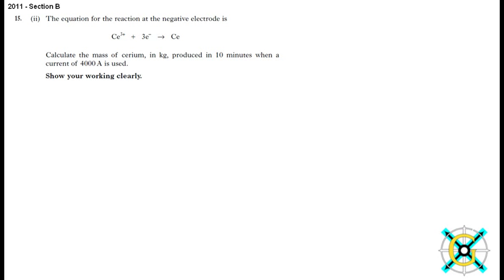This is a higher tutorial on quantitative electrolysis. I'm taking a question from 2011 section B, section 15. The question asks, the equation for the reaction at a negative electrode is Ce3+ plus 3 electrons goes to Ce. Calculate the mass of cerium in kilograms produced in 10 minutes when a current of 4000 amps is used. Show your working clearly.